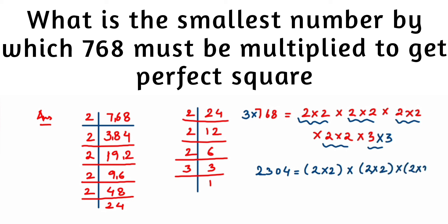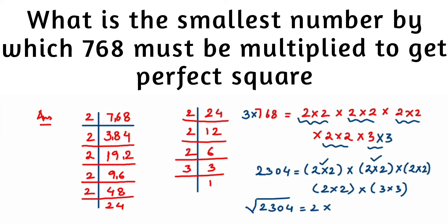To find the square root, we take one factor from each pair: √2304 = 2 × 2 × 2 × 2 × 3. Calculating: 2 × 2 = 4, 4 × 2 = 8, 8 × 2 = 16, 16 × 3 = 48. So the square root of 2304 is 48.